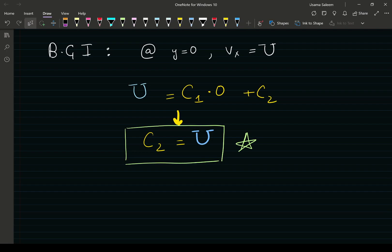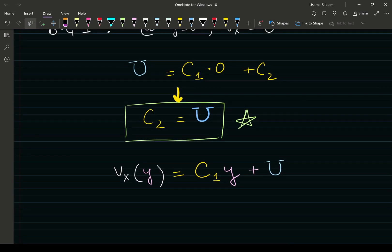Now let's rewrite our expression. Velocity in x as a function of y equals C1 times y, because C2 is equal to u. Now we're going to use BC2.